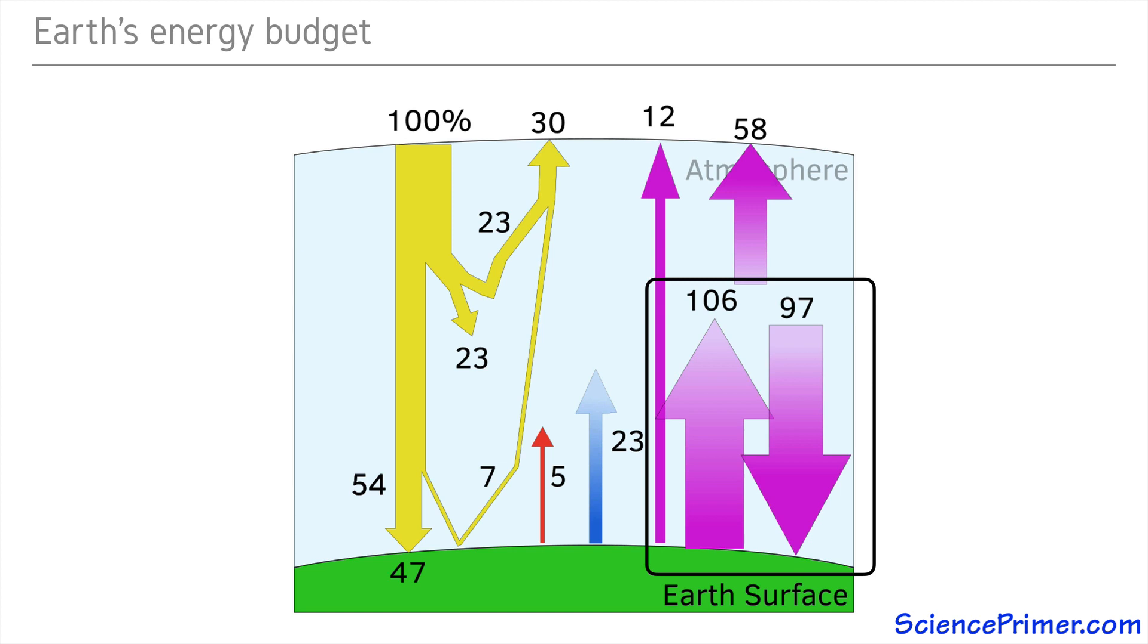Without carbon dioxide in the atmosphere, more energy would radiate right back into space and the Earth would be a much colder place.